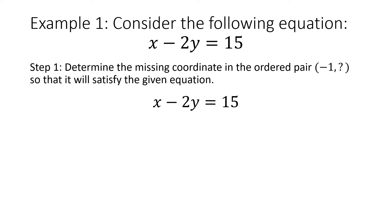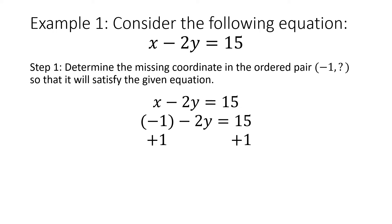The first thing we need to know is what value is that negative 1 in the ordered pair. Since it's the first number in the ordered pair, it's going to be our x. So we're going to substitute in negative 1 for our x. Now I'm going to solve this like a two-step equation. I need to move that negative 1, so I'm going to add 1 to both sides, bringing down my negative 2y, which equals 16, because 15 plus 1 is 16.